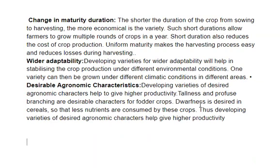Desirable agronomic characteristics — developing varieties with desired agronomic traits helps give higher productivity. For example, tallness and profuse branching are desirable characters for fodder crops but not for cereals. Dwarf varieties of cereals require fewer nutrients. Thus, developing varieties with desired agronomic characteristics helps give high productivity.